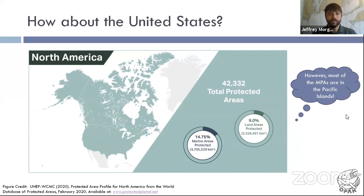How is the United States doing with these goals? We're at almost 15% of our area being marine protected area, but that number is a little bit skewed because most of it is in the Pacific around our islands. Not saying that's a bad thing, but we could do a lot better if we were to protect more of our coastline with more strict regulations. If you go to the MPA Atlas or protectedplanet.net, you can investigate where those marine protected areas are.